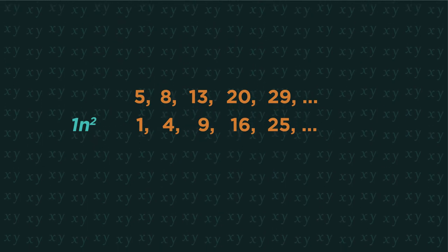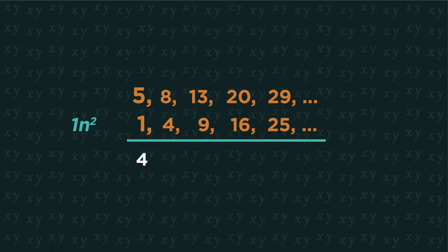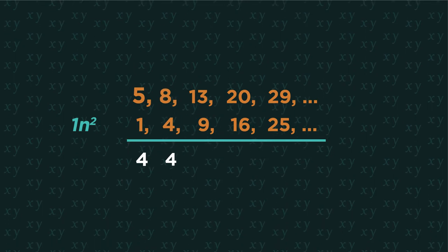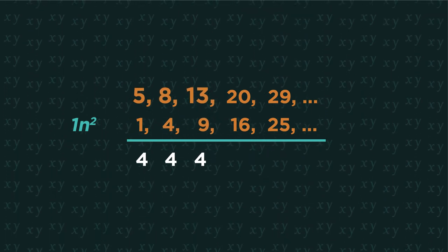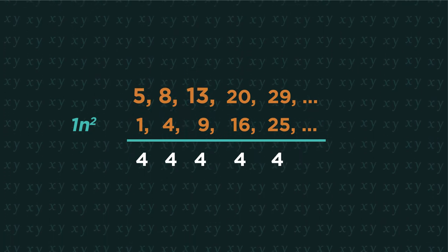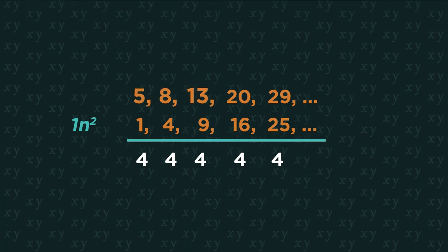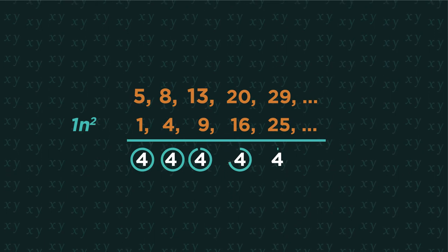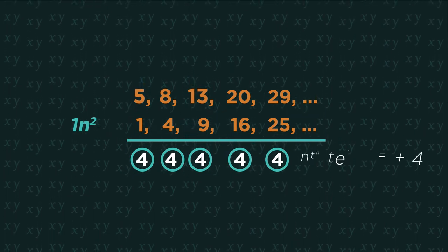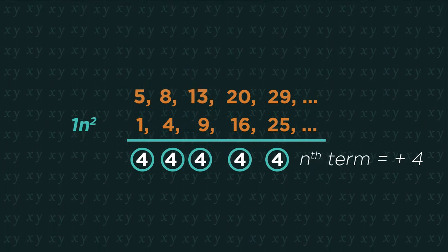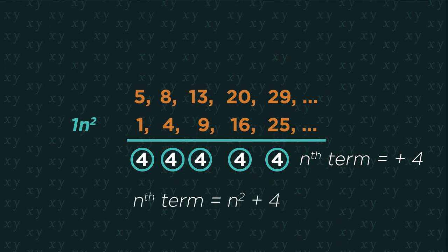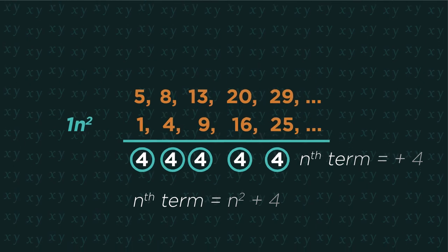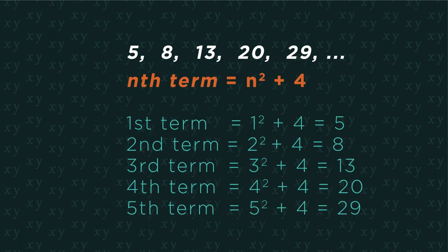Compare the difference. So 5 to 1 is 4, 8 to 4 is 4, 13 to 9 is 4 and so on. All you need to do is find the nth term of this sequence. And you have your quadratic nth term formula. So it's n squared plus 4 for this sequence. As always, you should check it.